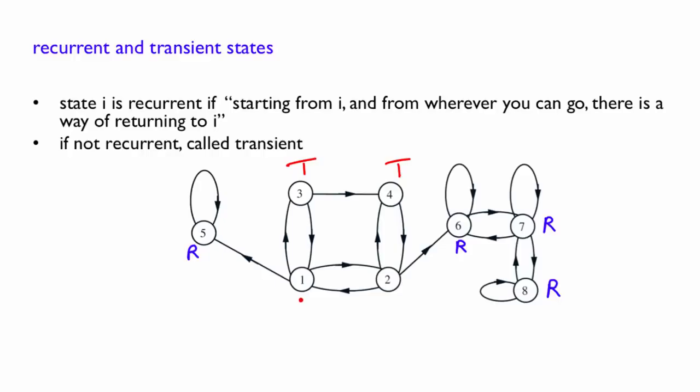And it is clear that for the same reason, 1 will be a transient state and 2 will also be a transient state. Now, if a state is transient, like 3, 4, 1, or 2, it means that it will be visited only a finite number of times. And in the long run, the probability of being in a transient state will converge to 0.